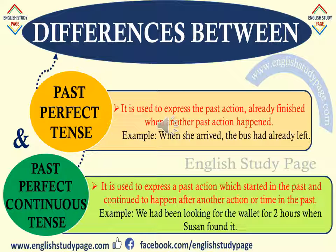In this slide, the difference between past perfect tense and past perfect continuous tense is given. Past perfect tense is used to express an action that is already finished when another action happened — for example: 'When she arrived, the bus had already left.' Past perfect continuous tense is used to express a past action which started in the past and continued after another action or time in the past only — not in the present. For example: 'We had been looking for the wallet for two hours when Suzanne found it.'